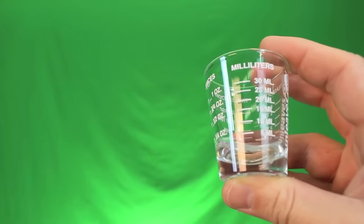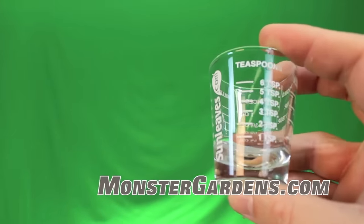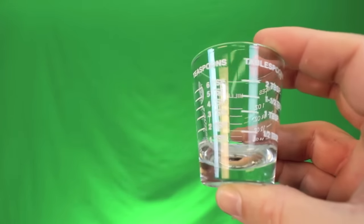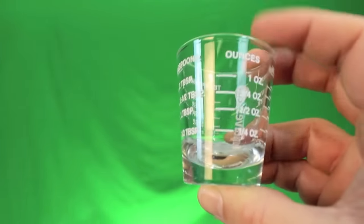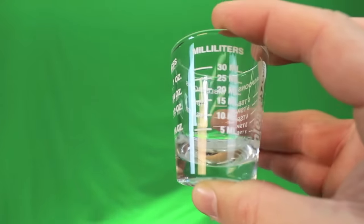It doesn't have the drinks on it, however, but it does have the teaspoons, tablespoons, ounces, and milliliters. It goes all the way down from 5 milliliters all the way up to 30 milliliters. That is the 1-ounce shot glass for measuring.